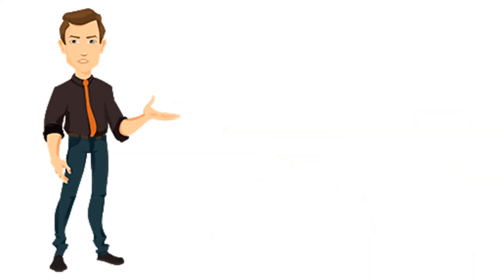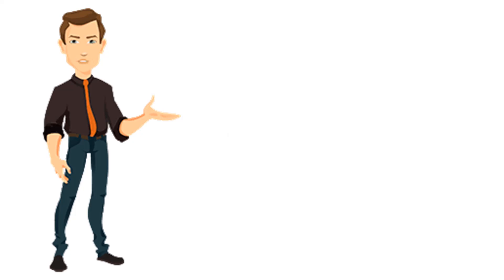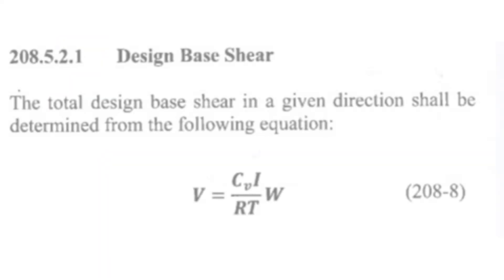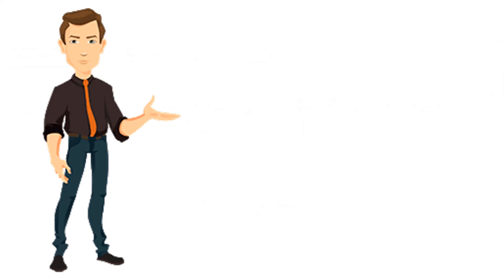Step 3: Now that we have all the seismic considerations and the weight of the structure, we are ready to solve the base shear. The formula for design base shear is found in Chapter 2, page 214, Section 208.5.2.1: V = (Cv × I × W) / (R × T), where I is the importance factor and W is the total weight.